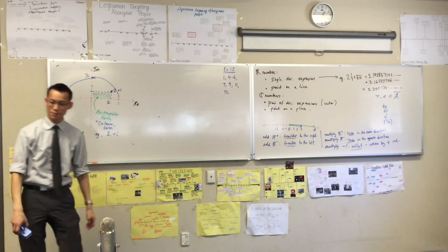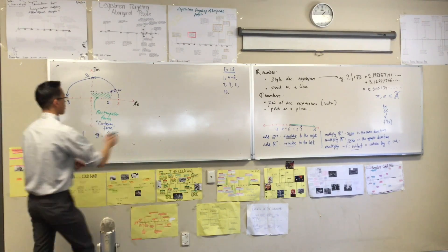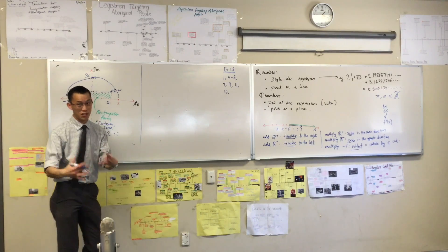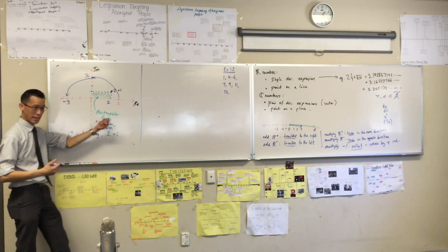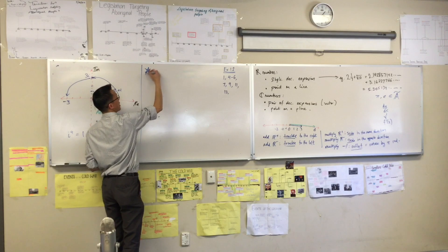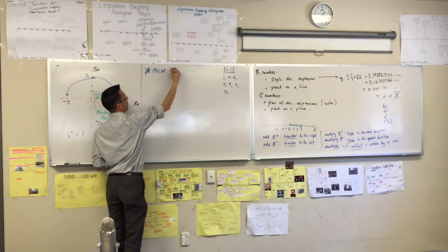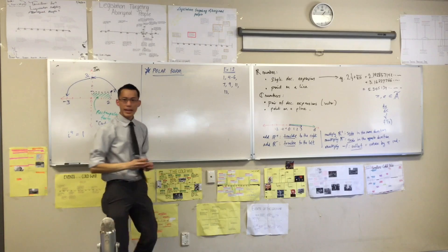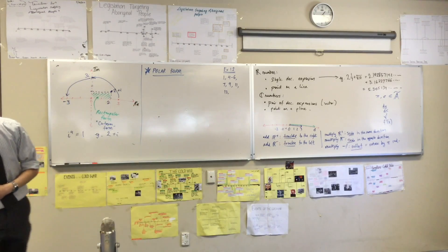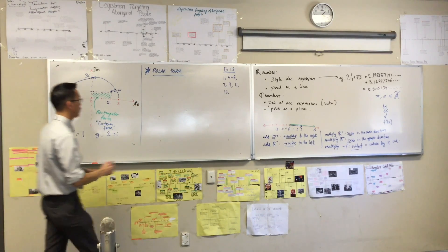This is rectangular form, right? This next form is called, again, it's got a bunch of different names, but my favorite, just like rectangular form, my favorite name for the next thing is called polar form. Okay? Now, draw for me, please, another argand diagram. Can you do that for me?